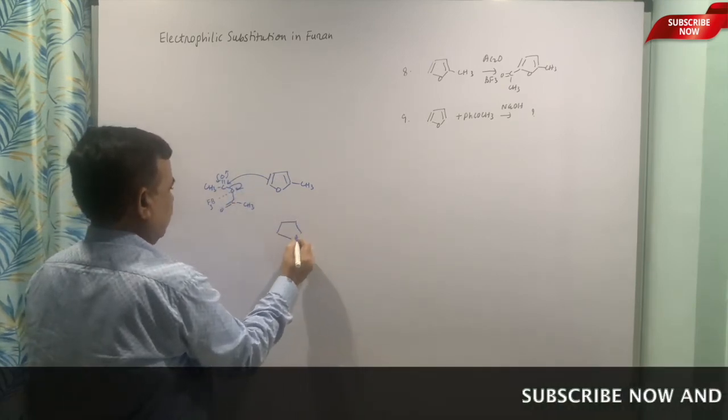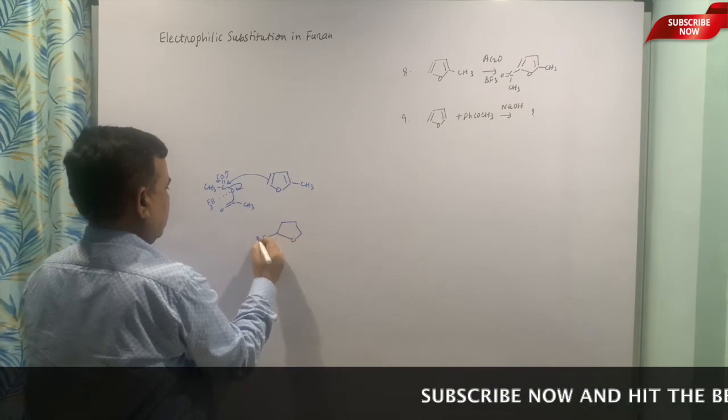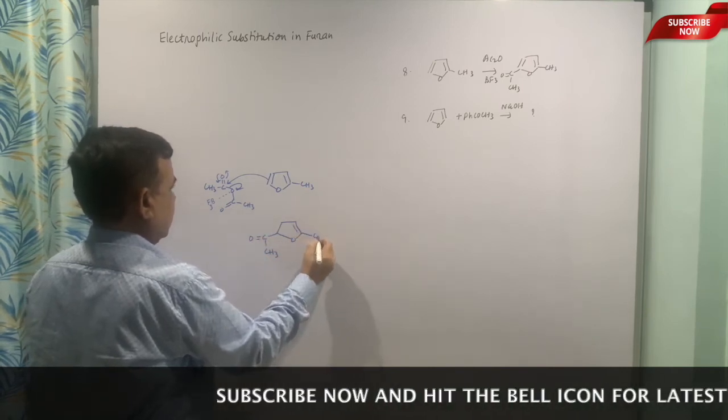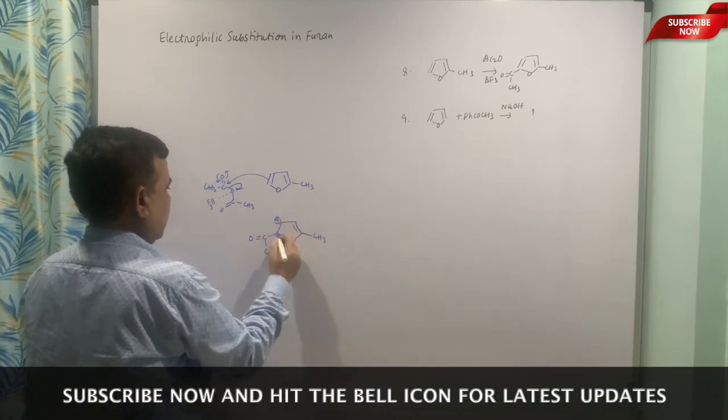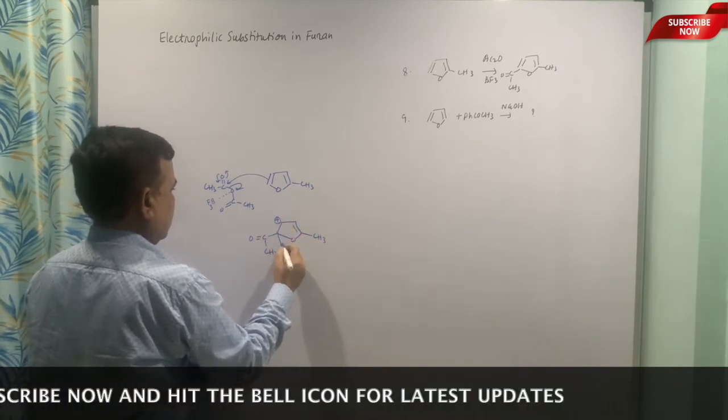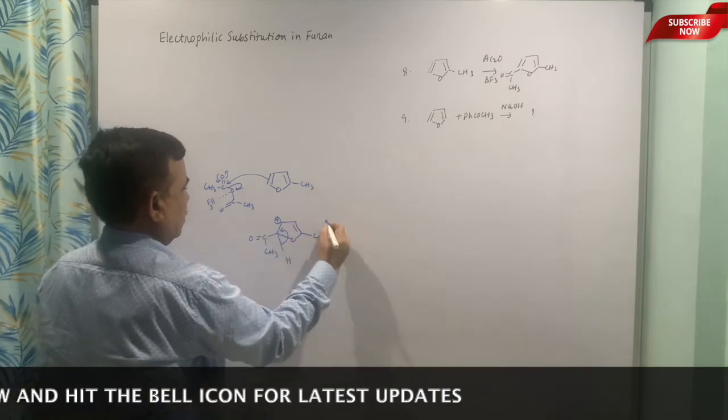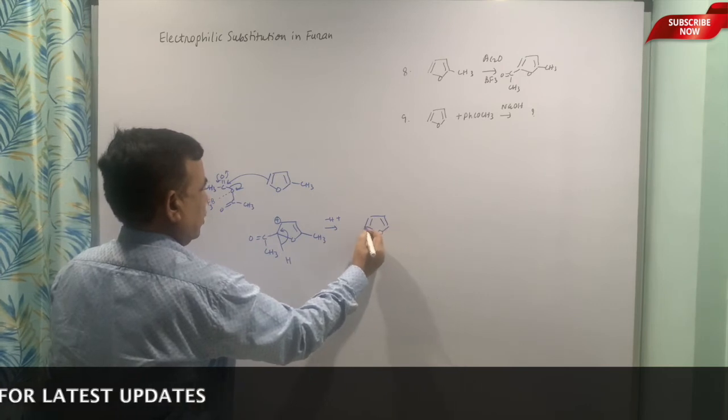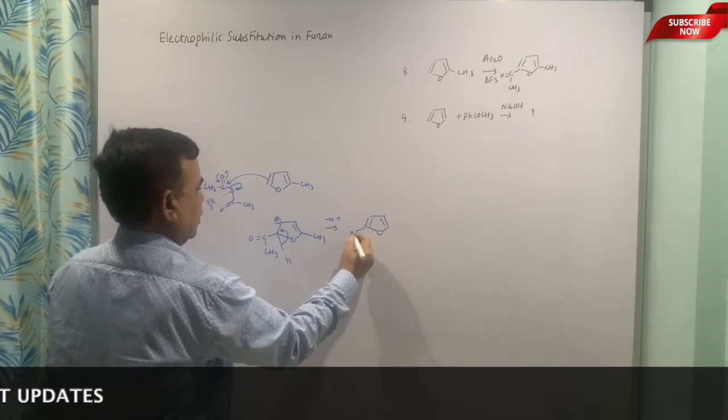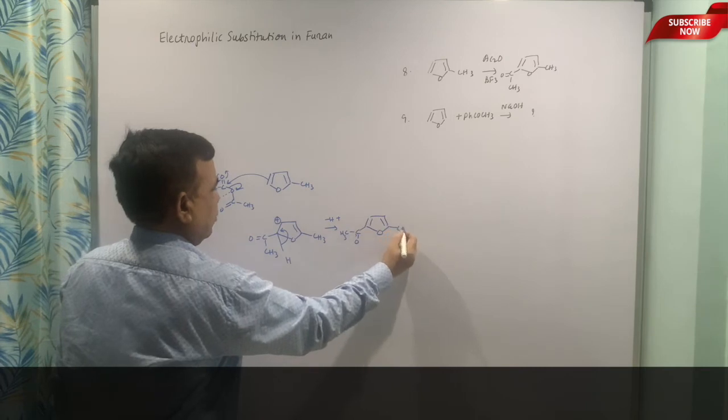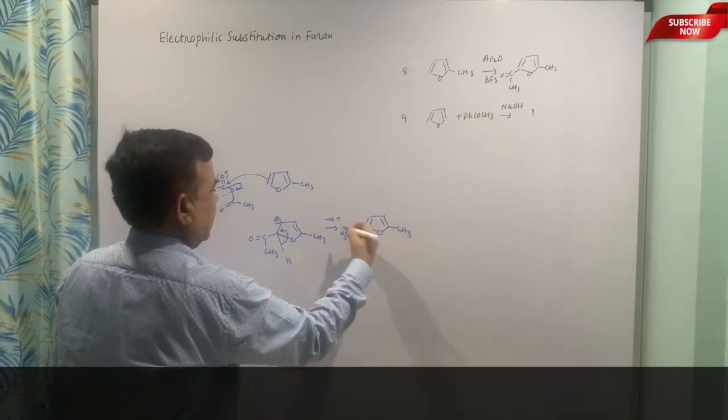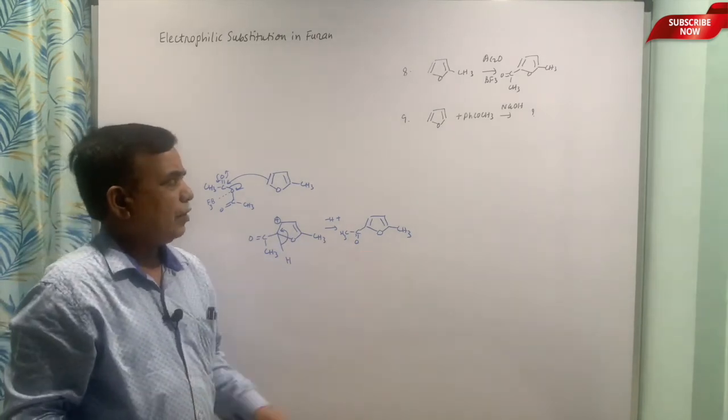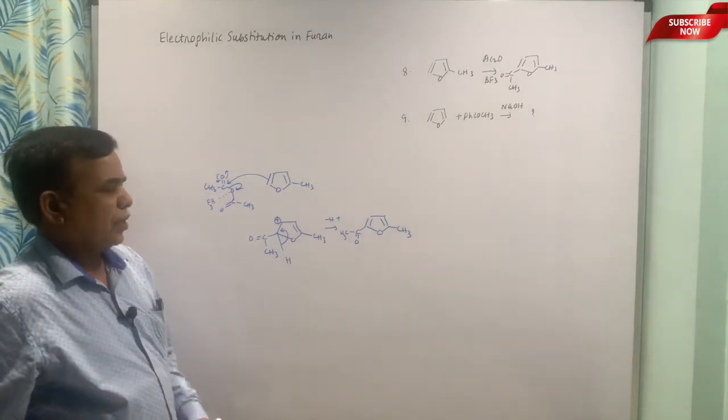So ultimately what we have is COCH3, and then the CH3 would be there, this is plus, and the proton is lost to give you the acyl derivative in which the second position was substituted. Now the electrophile is coming at the 5 position, which is available for electrophilic substitution reaction.